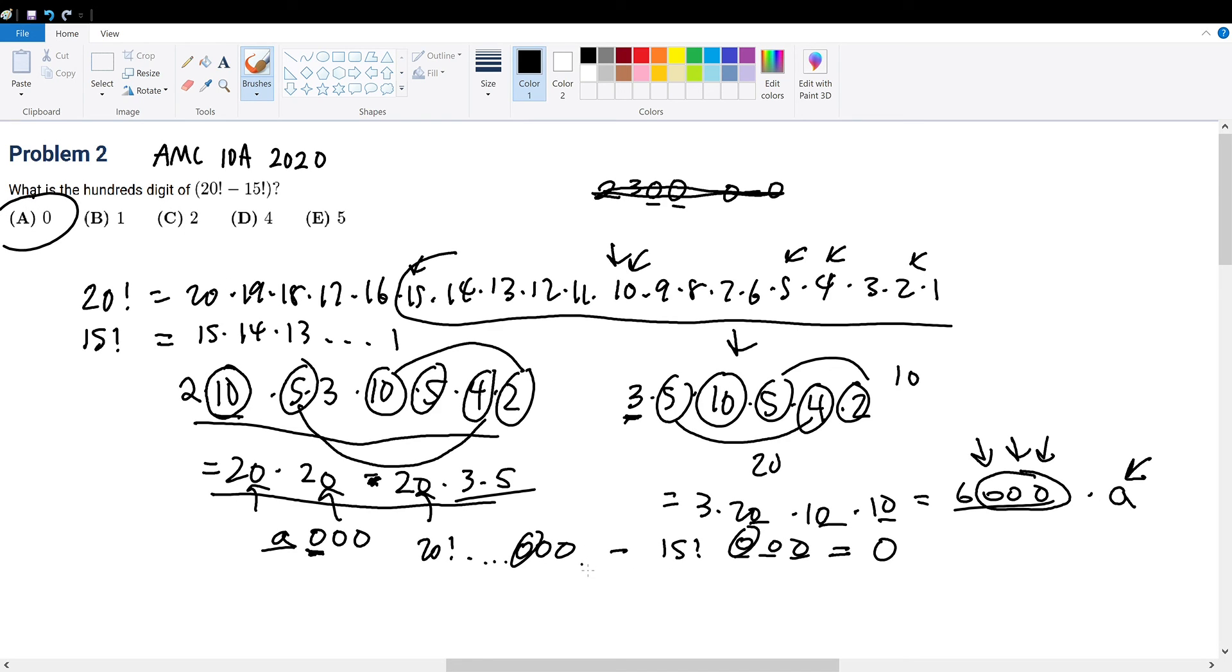And the reason why this, I need to find the tens and units digit, because the tens and units digit might determine how the hundredth digit might change. But in this case, they're all zero, so the solution is zero.